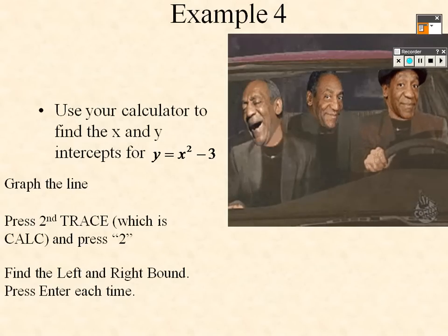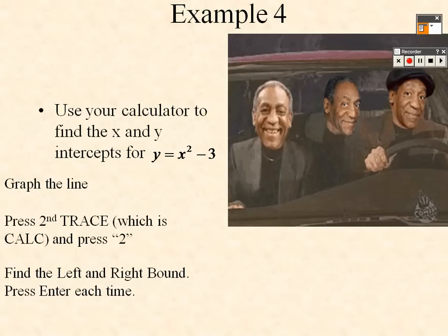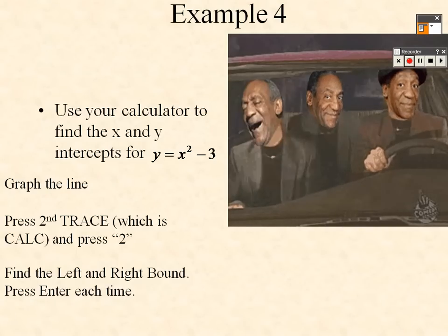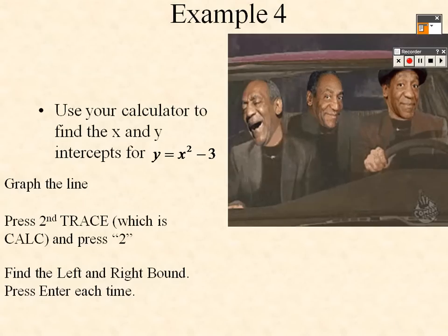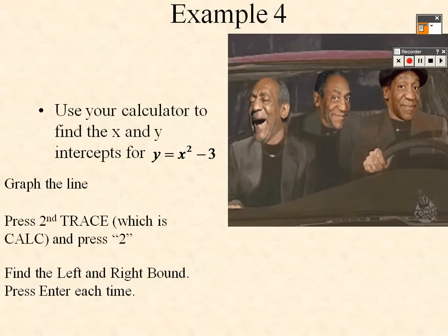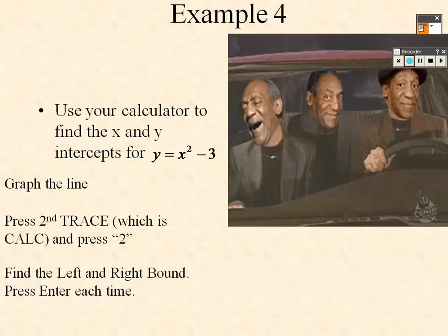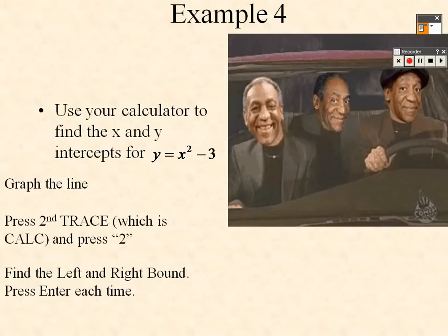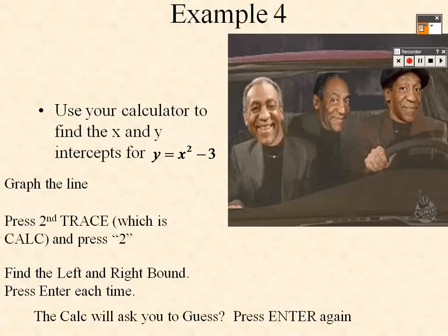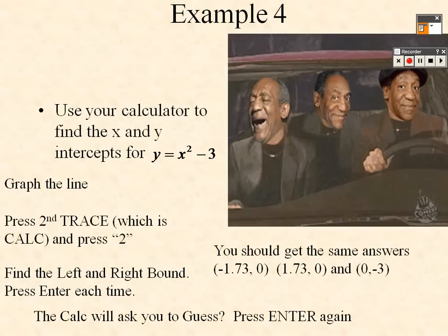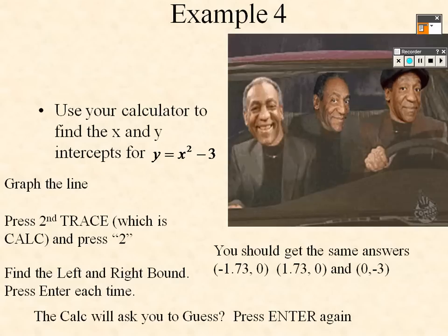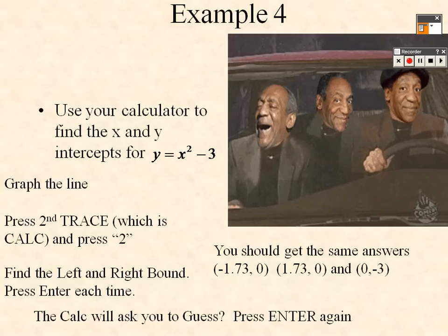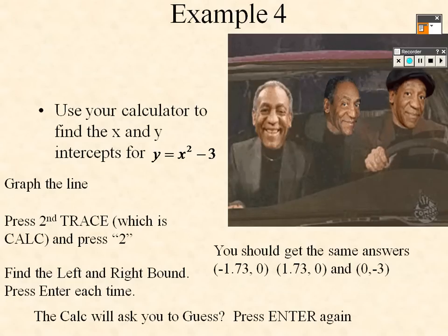To find the left bound, move the cursor to the left of where the graph crosses the x-axis and press Enter. Then for the right bound, move to the right of the crossing and press Enter. When it says Guess, press Enter again and it will return -1.73. Repeat the process for the other x-intercept: set the left bound below it and right bound above it, and you should get 1.73.